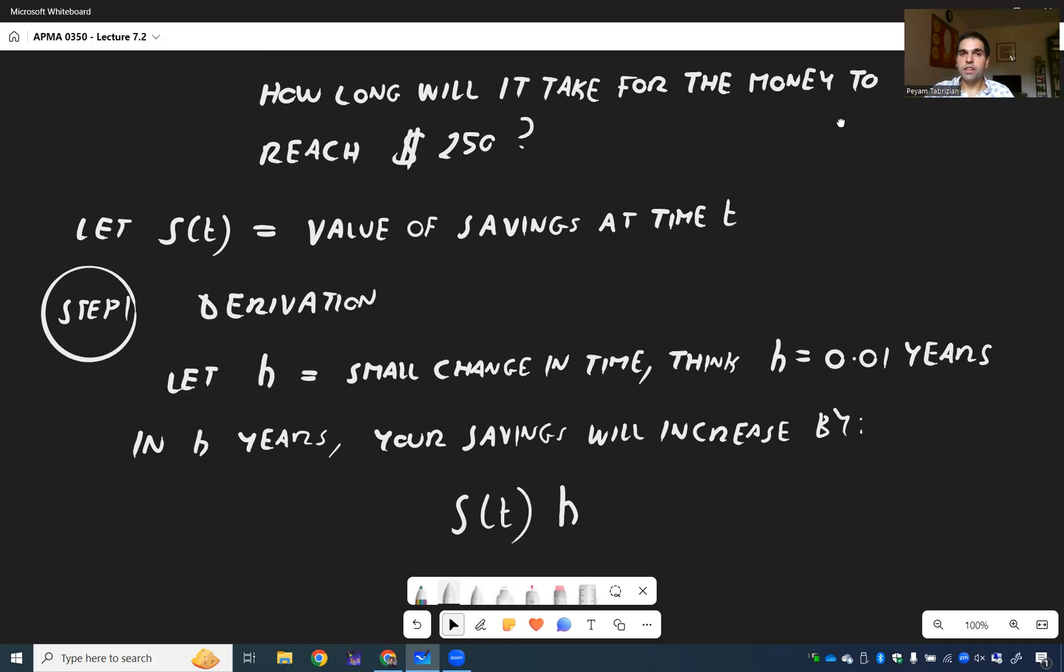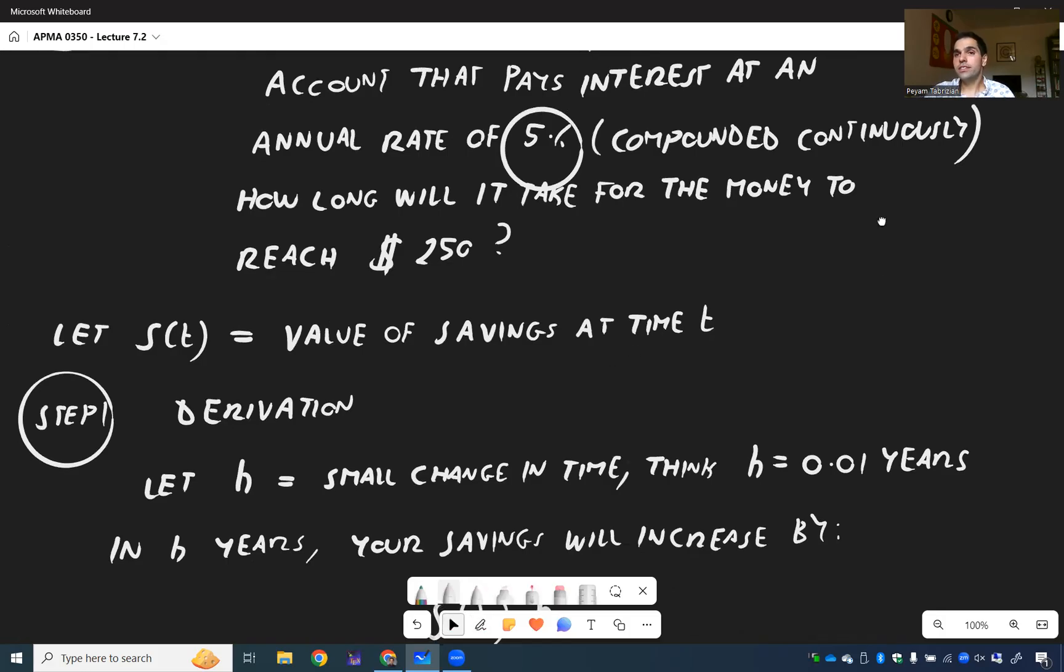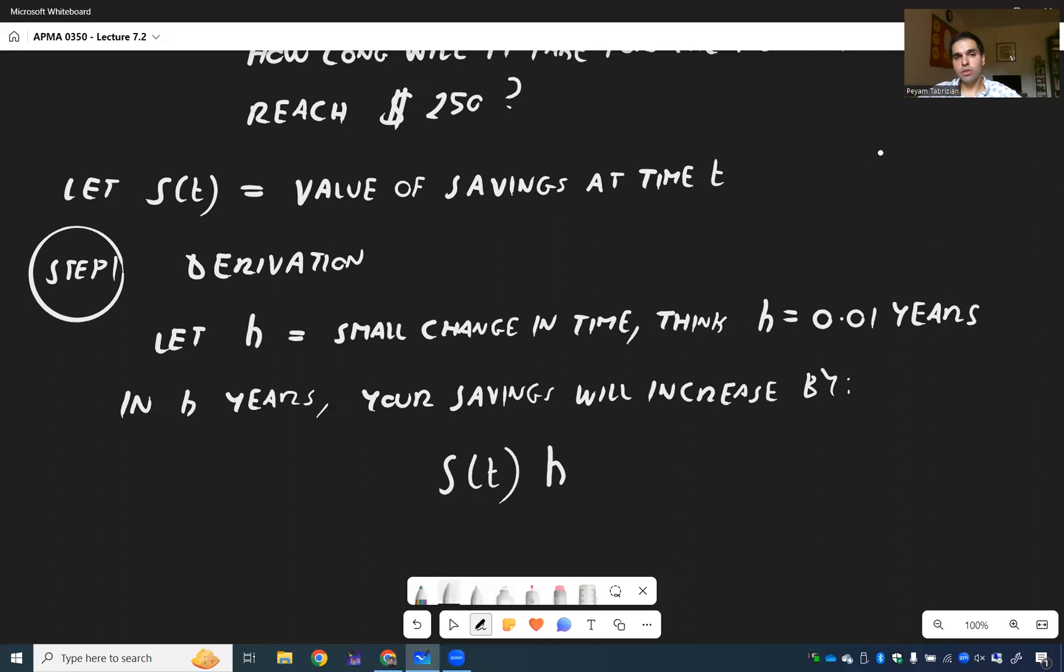And last but not least, well, the interest rate probably plays a big role here, because if we give you 2%, it's not the same thing as 5%. So in fact, to take into account the interest rate, you put 0.05. So that's kind of what it means to be compounded continuously also. In h years, you have something proportional to h. Of course, dollars.